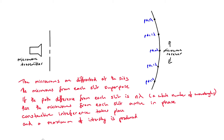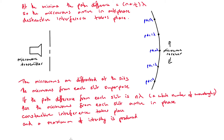To summarise: the microwaves are diffracted at the slits, and the microwaves from each slit superpose as they overlap. If the path difference from each slit is a whole number of wavelengths, the microwaves arrive in phase, leading to constructive interference and a maximum of intensity. At minima, the path difference equals (n + ½)λ - so half a wavelength for the first minimum, one and a half wavelengths for the second, two and a half for the third - the waves arrive in antiphase, destructive interference occurs, and a minimum of intensity results.